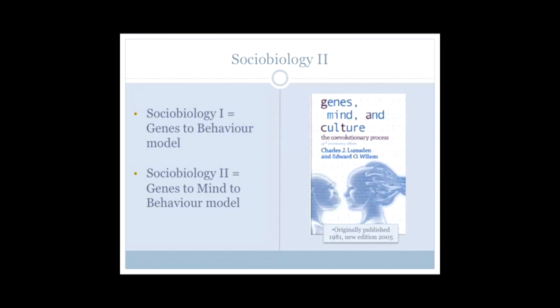We can think of sociobiology as being divided into two different phases. In the first phase, represented by Wilson's book Sociobiology, we see a genes-to-behavior model. In phase two, we see a genes-to-mind-to-behavior model. In the first model, there'd be no consideration paid to the impact of evolution on the brain or the mind. But in the second model, the mind was going to be brought in as something that was evolved, and that was going to explain why humans behave in the way that they behave.